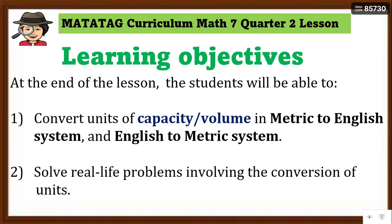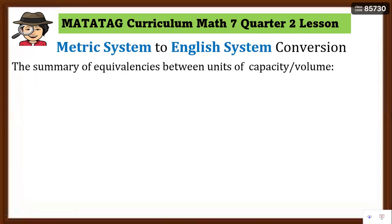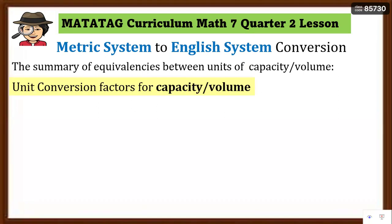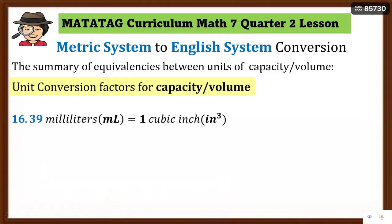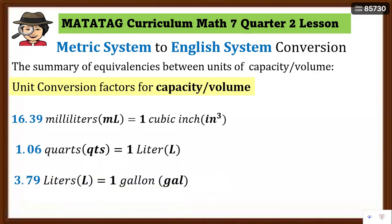Are you ready to learn? Let's start. If we haven't yet mastered our lesson about metric system and English system conversion, we can go back to our YouTube channel to watch. Let's have the summary of equivalences between units of capacity or volume. We have the unit conversion factors: 16.39 milliliters is equal to one cubic inch, 1.06 quarts is equal to one liter, and 3.79 liters is equal to one gallon.